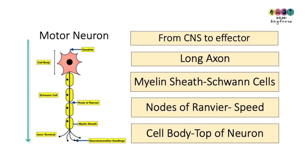The key points on the motor neuron: it carries an electrical impulse from the central nervous system towards an effector — either a muscle or a gland. It has very small dendrites leading into the cell body and a long axon.